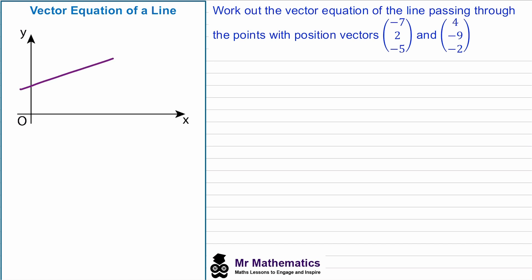So say we have this line and we want to find the vector equation of it, so we can work out the 3D coordinates of any point that lies on this line. To do this we need two things: we need to know a point that lies on the line originating from the origin — a position vector which we'll call a — and we need to know the direction of the line, which is a direction vector that runs parallel to the line; we'll call this b.